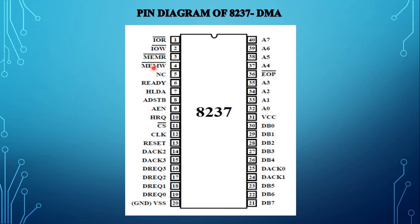Pin number 5 should always be at logic high level. An internal pull-up resistor will establish a logic high when the pin is left floating, but it is recommended that pin 5 be connected to VCC. Pin number 6 is the ready signal. When the ready input is tied low, this signal can be used to extend the memory read and write pulse to transfer data between slow memory and IO devices. Pin number 7 is HLDA, the hold acknowledgement signal. It is an input signal sent by the processor to inform the acceptance of the hold request.